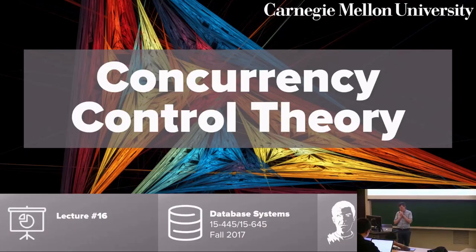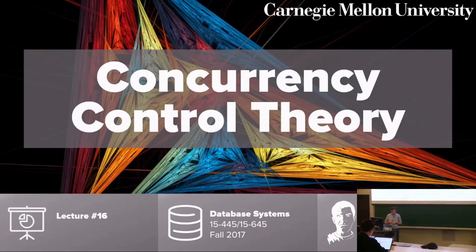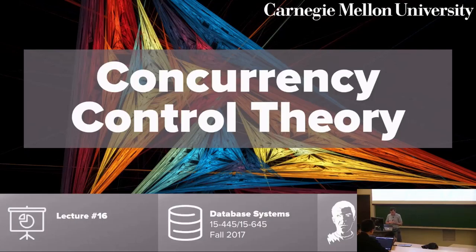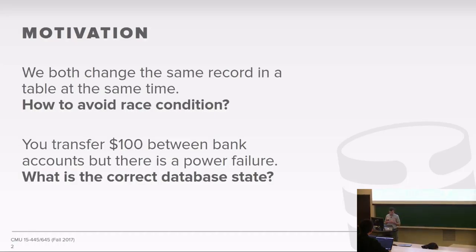We're now entering a new chapter in the semester, where we're going to start talking about concurrency control and allowing multiple queries or transactions — I'll define what a transaction is in a second — to run at the same time and modify the database at the same time. This is my favorite lecture because this is one of the most fascinating things that database systems can do: this magic of allowing things to run at the same time, with almost the illusion that they're running on a database by themselves.